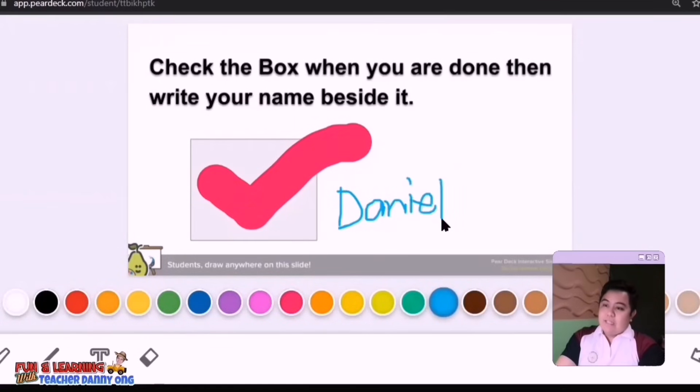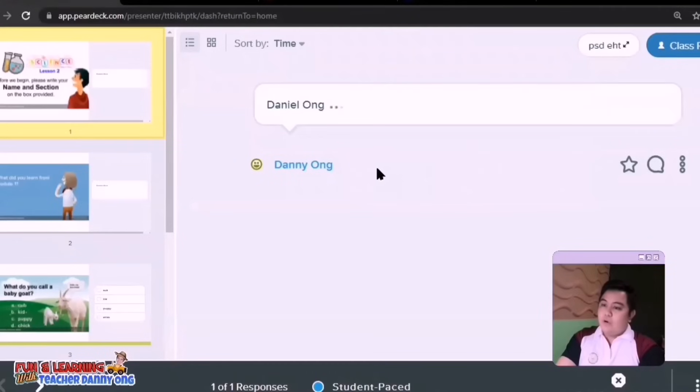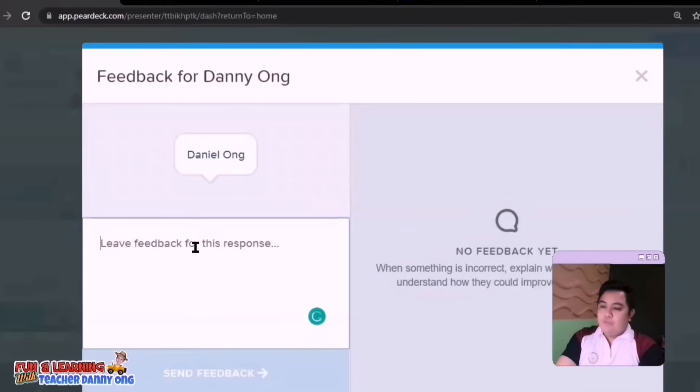And the last step, step five, is to review your students' responses. Now at the end of the session, you may export students' answers to a Google Sheet or manually check their answers on the teacher's dashboard view here.